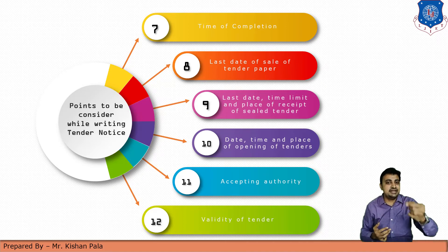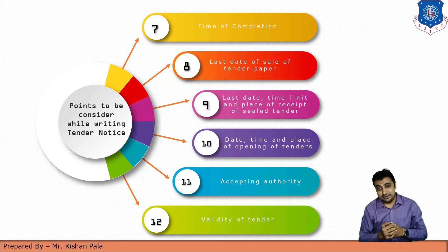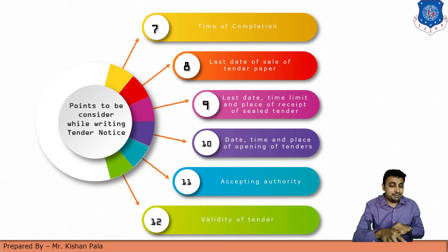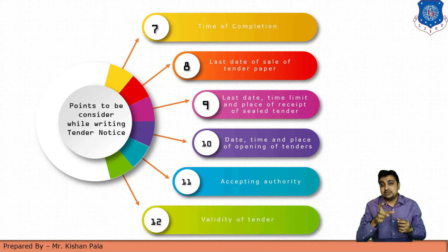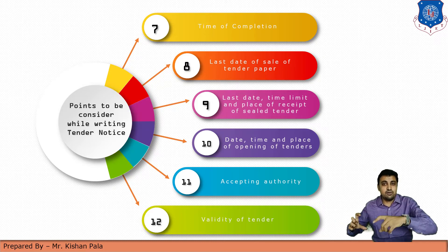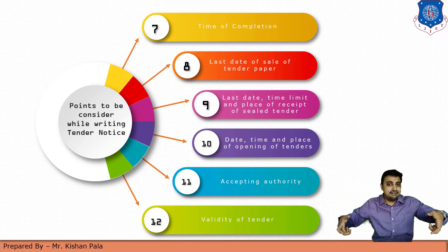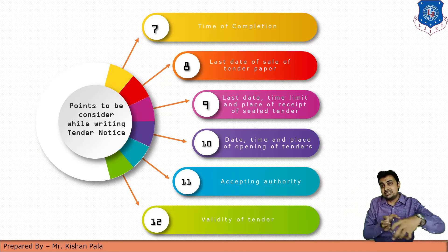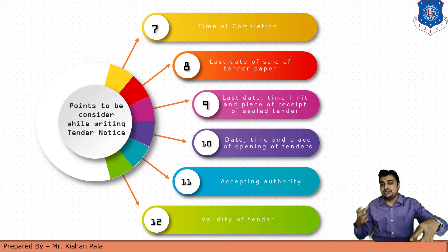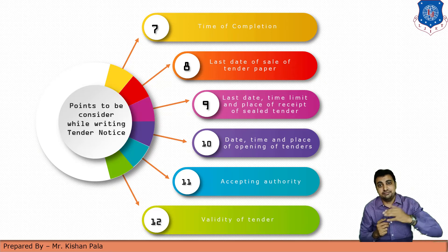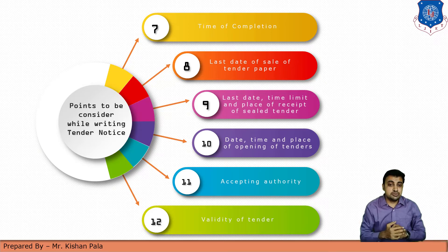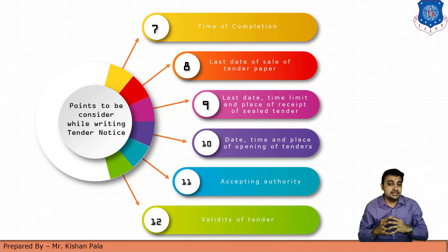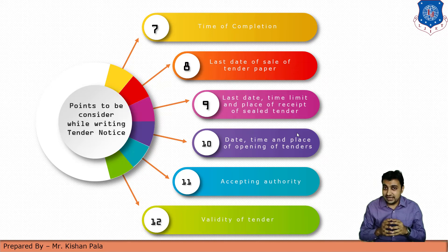Next is the last date of sale of the tender paper — the last date should be mentioned. Next is the last date, time limit, and place of receipt of the sealed tender. The contractor must give the sealed tender to the authorized person before the specified last date and time. Next is the date, time, and place of opening of the tender, followed by accepting authorities, and the last point is validity of tender.